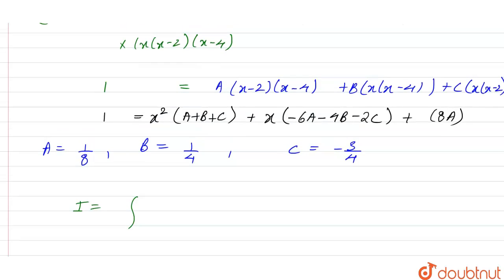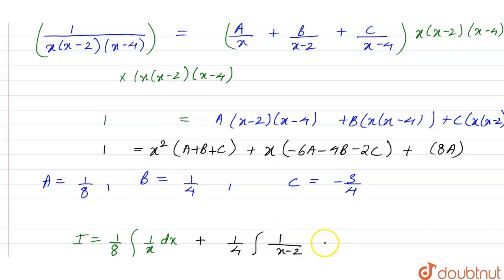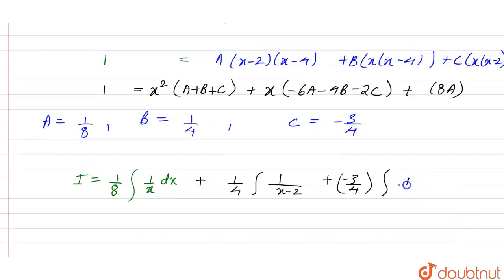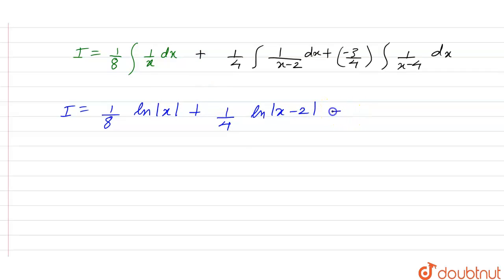So I is equal to the integral with A = 1/8 times (1/x) dx, plus B = 1/4 times the integral of 1 upon (x minus 2) dx, plus C = minus 3/4 times the integral of 1 upon (x minus 4) dx. This gives us 1/8 ln|x| plus 1/4 ln|x minus 2| minus 3/4 ln|x minus 4|.